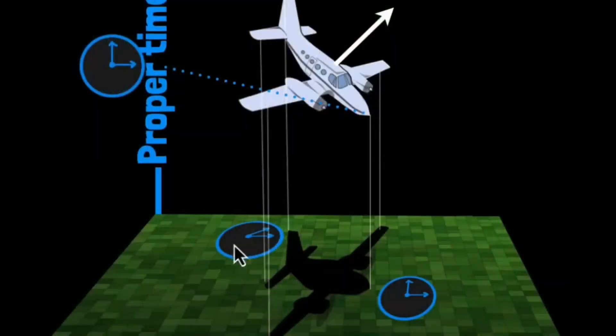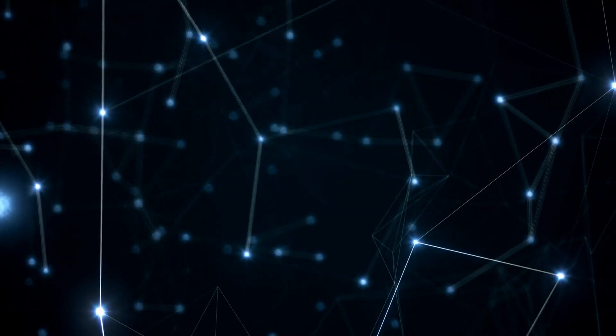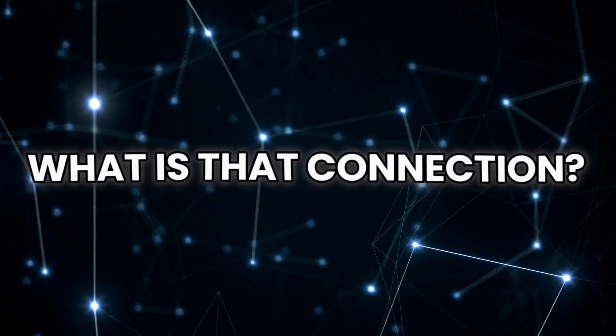and so by looking at this, they will be seeing that there is some connection between the vertical speed and the horizontal speed. When the horizontal speed increases, the vertical speed decreases. When the horizontal speed decreases, the vertical speed increases. There is some connection between them, and what is that connection?